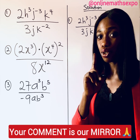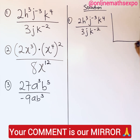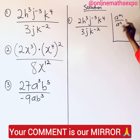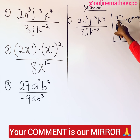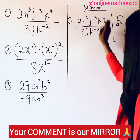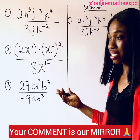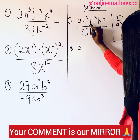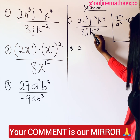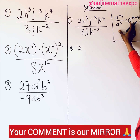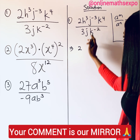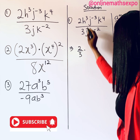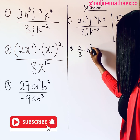Remember the rule we discussed: when you have a to the power of m over a to the power of n, and the bases are the same, you simply subtract — division turns to subtraction. We can apply that here. We split the expression: 2 over 3, multiplied by h cubed, and then handle j and k separately for easy simplification.